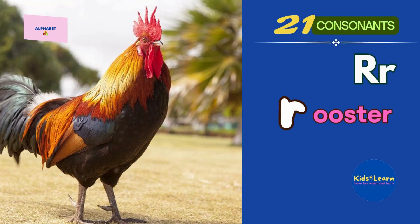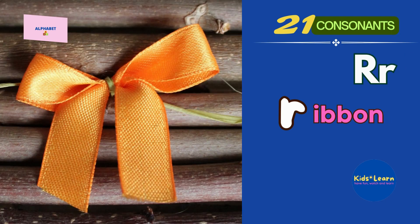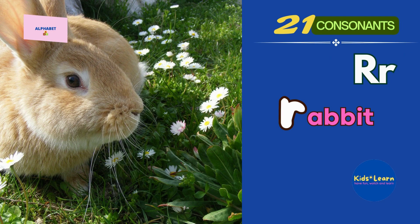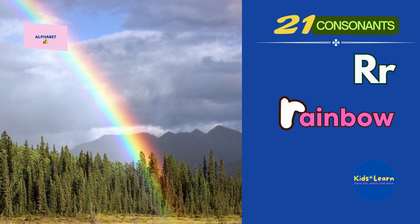R is for Rooster. R is for Ribbon. R is for Robot. R is for Rabbit. R is for Rainbow.